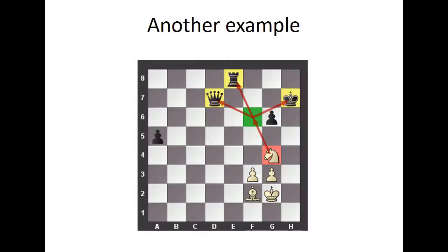Another example of double simultaneous attack: here, the king, queen, and rook are all under attack when the knight moves to this position.